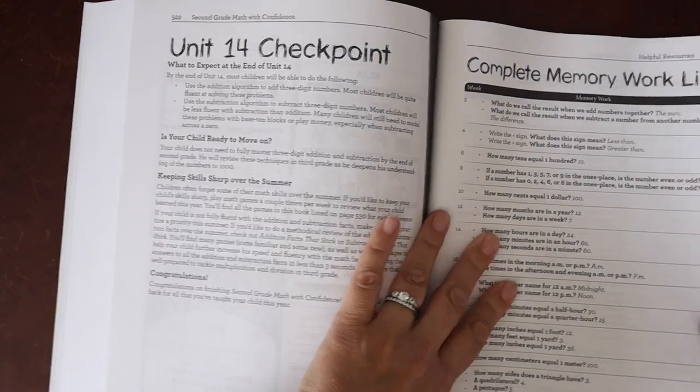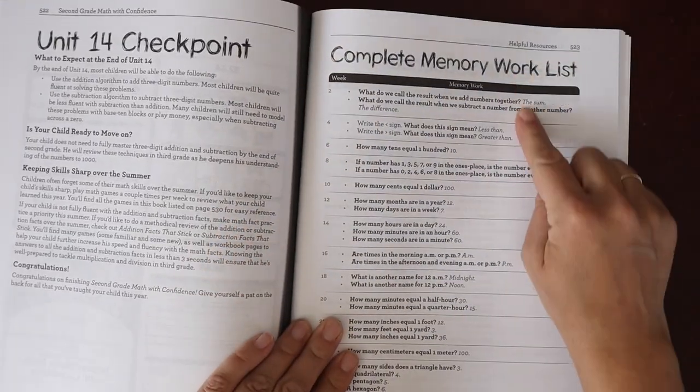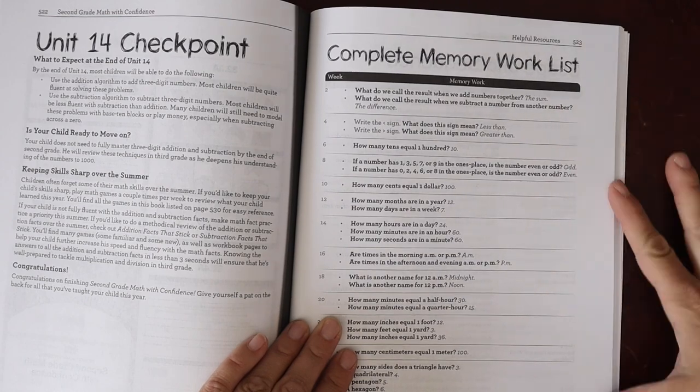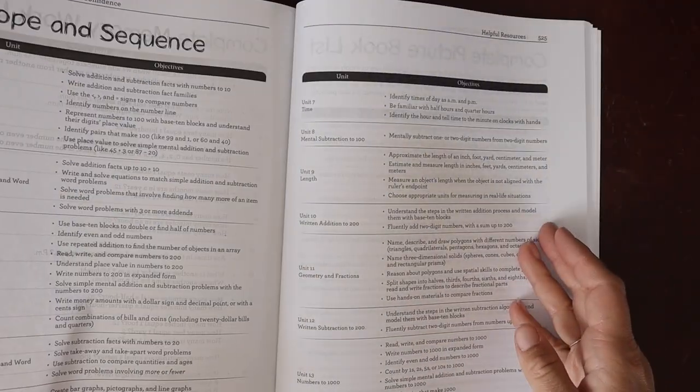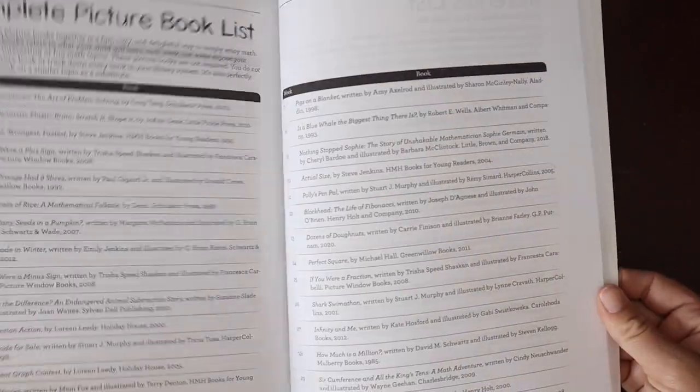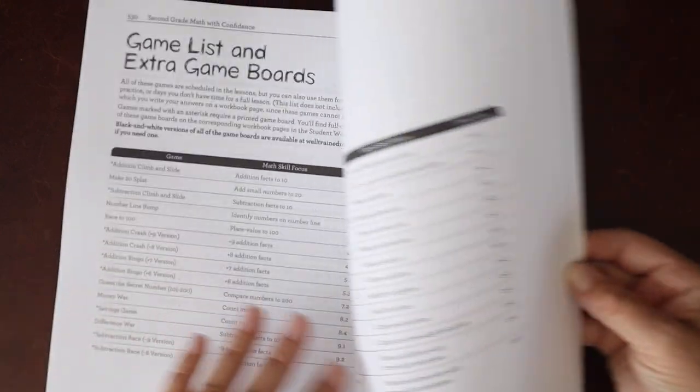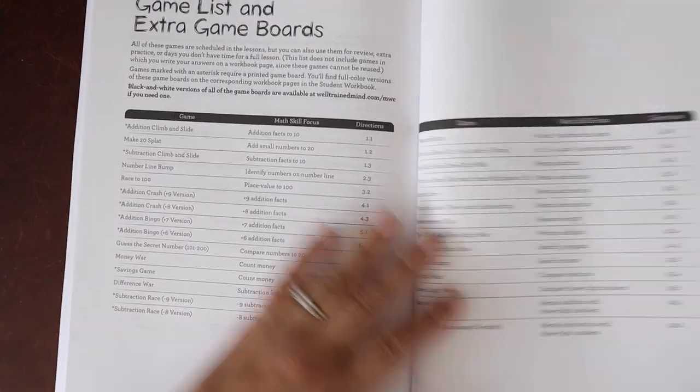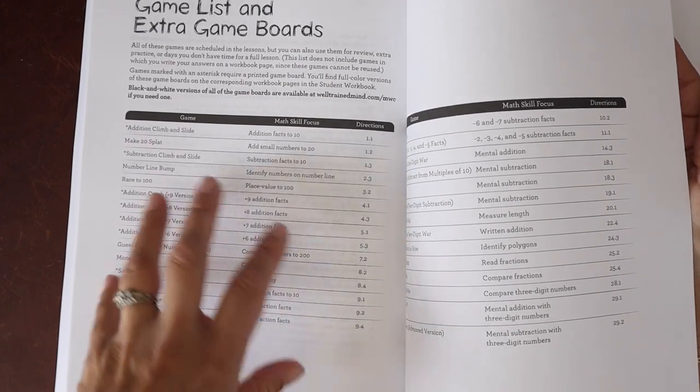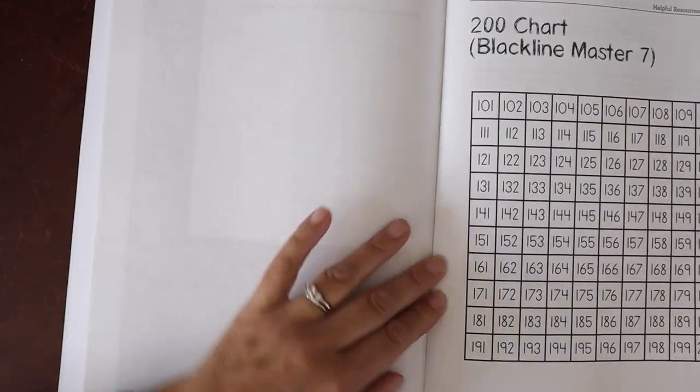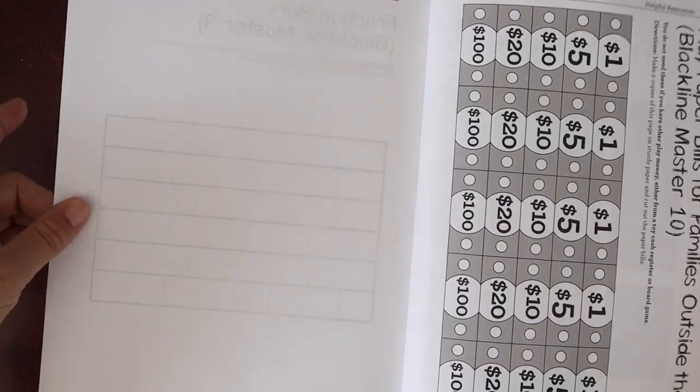We have our unit 14 checkpoint, we have our complete memory work list. So this is awesome that we have memory work pulled in here, and in fact I think I'm going to add this to our work for this year. We have our complete picture book list here, material list, game list, and extra game boards. Again, these are all games that she has developed. You don't need to go out and buy other math games. And then you have a lot of black line masters in here for the different charts that you might need throughout. I do wish those charts were perforated, but you know, it is what it is.